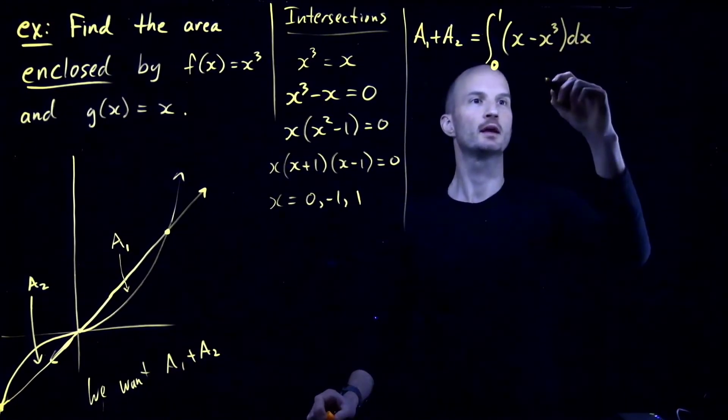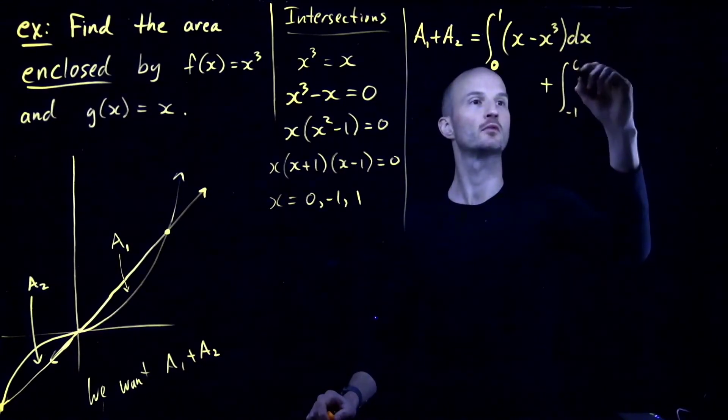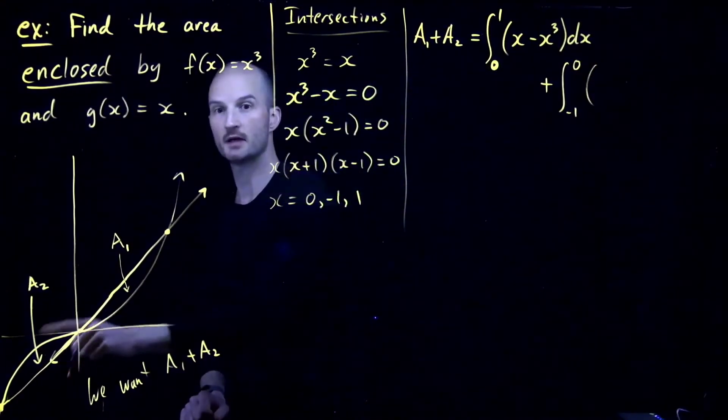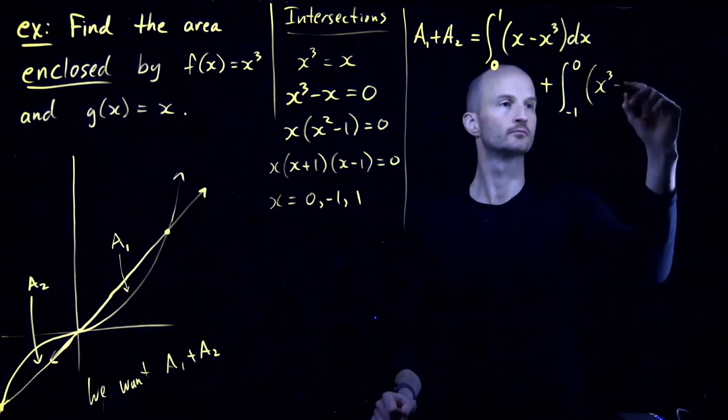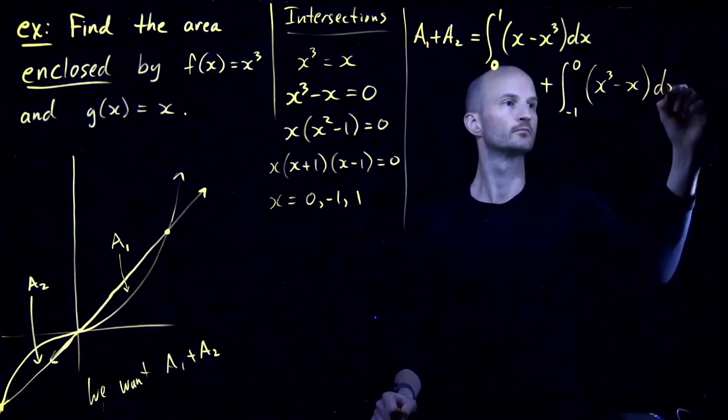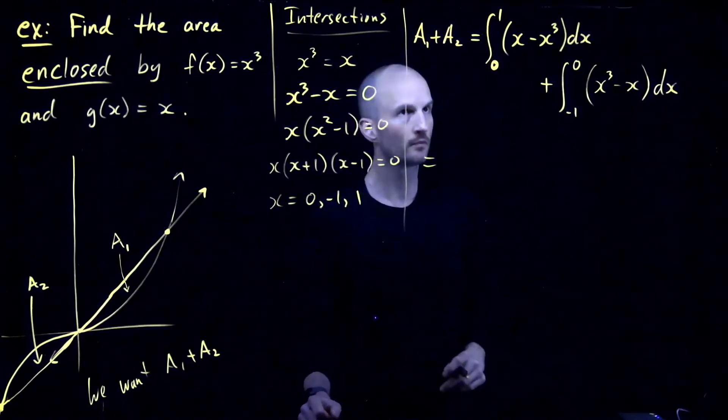And then we have our A2, which is the integral from negative 1 to 0 of, now it's the other way around, right? The cubic is on top.